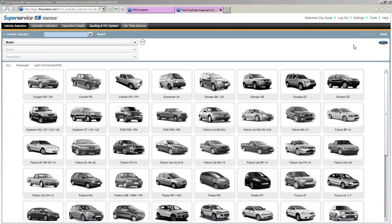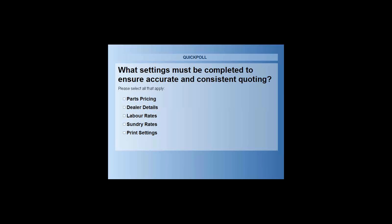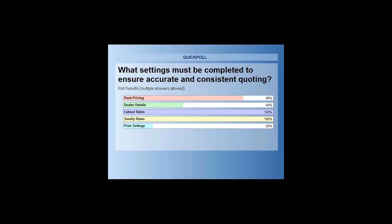Does anyone have a question for Clay? You can type your question into the question field. The first poll is: what settings must be completed to ensure accurate and consistent quoting? You can select all that apply — is it parts pricing, dealer details, labour rates, sundry rates, or print settings? The answer is labour rates, sundry rates, and parts pricing — those are the key ones. Thanks everybody for voting.